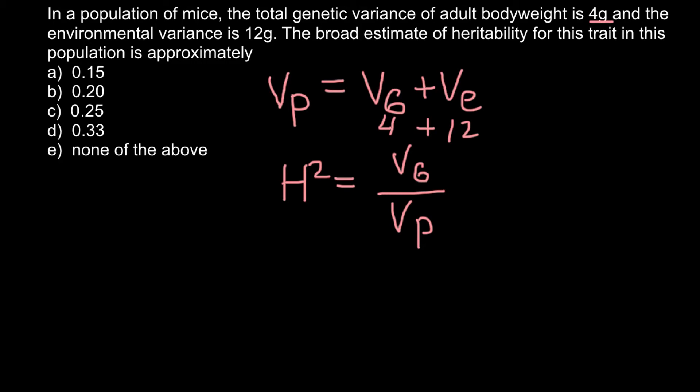So now we know that total phenotypic variance would be 16 grams. So now we can use this information.